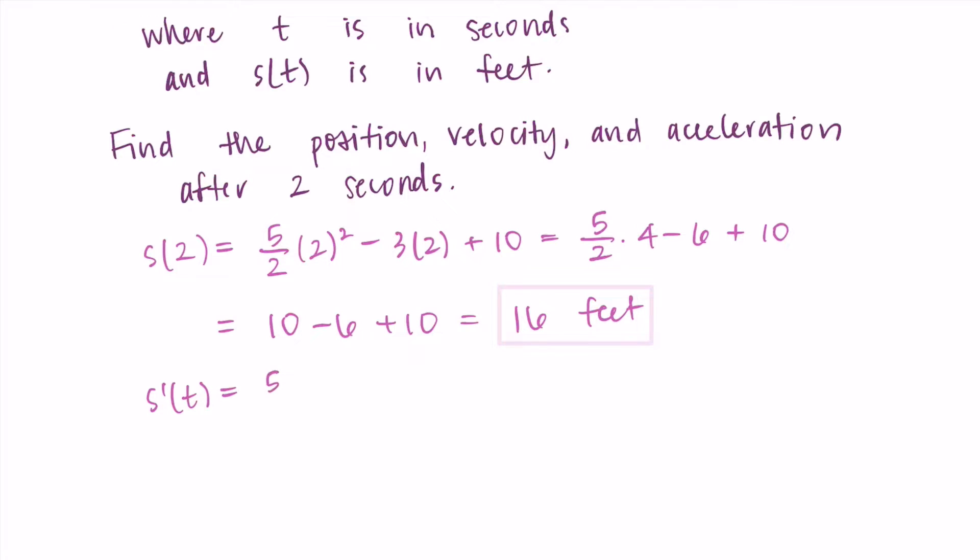The derivative of 3t is just 3, and the derivative of 10 is zero. So I'm left with 5t - 3 as my derivative, which is the velocity of this rocket at any time t.